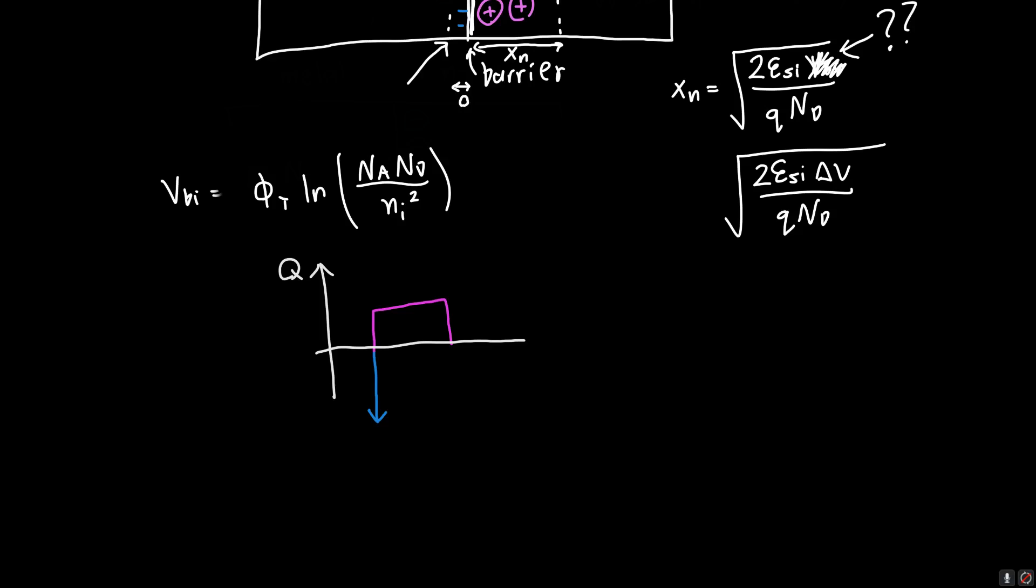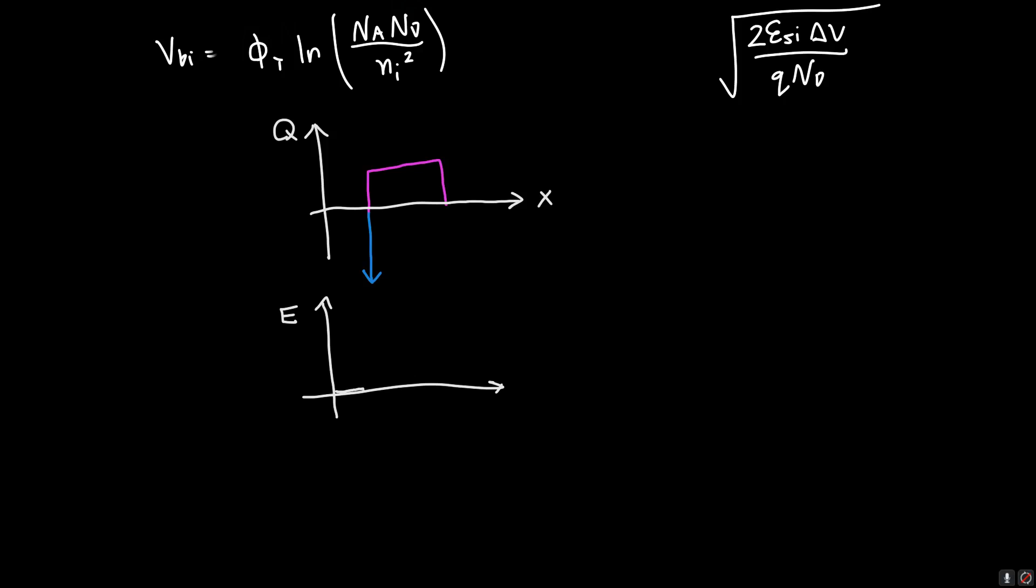If we've got a Delta function on one side and a bunch of positive charge on the other side, this is our charge profile Q. Delta functions are written as an upside-down arrow. The electric field is just the integral of the charge density divided by the permittivity. It's going to be zero, then jump down almost instantaneously to a negative value, then as we integrate the positive side it's going to go up, and then the electric field is going to be zero outside that.